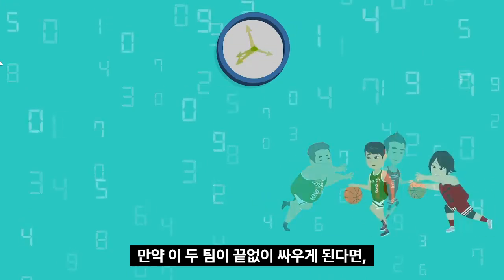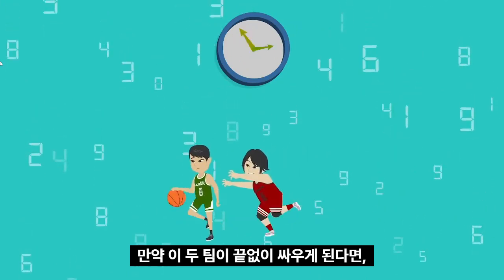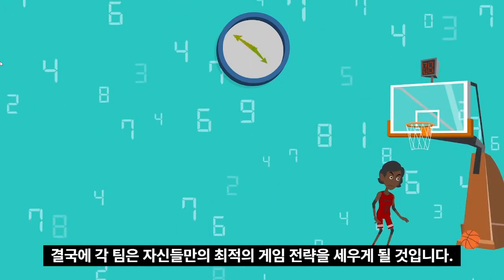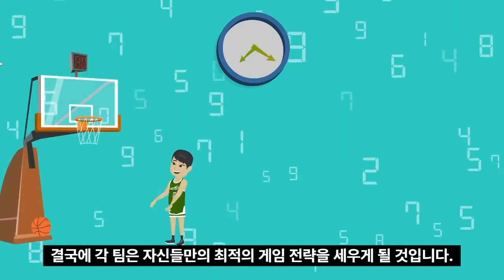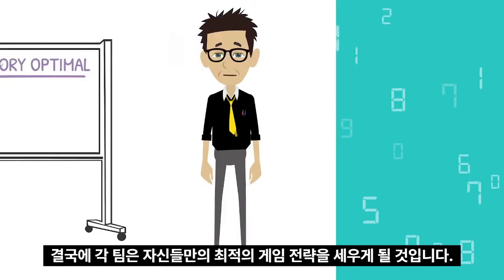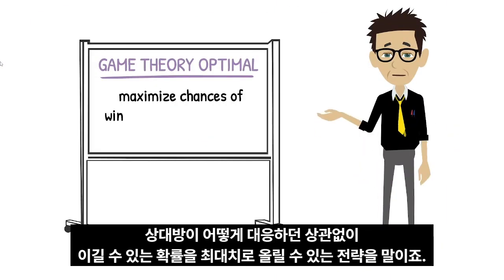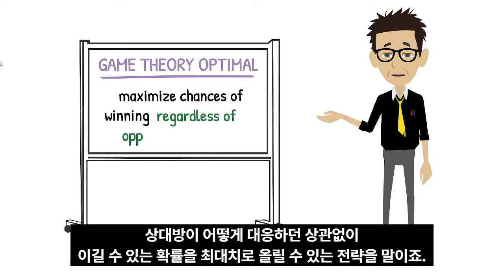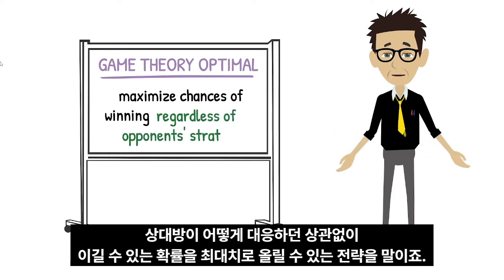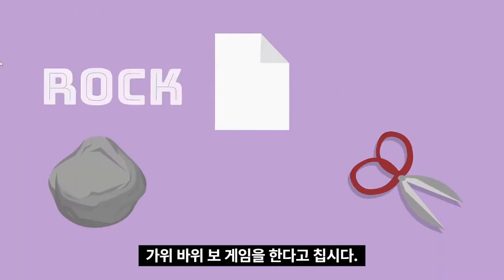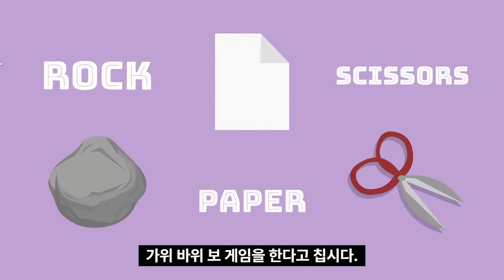If these two teams continued battling an infinite number of times, each team would eventually develop their own optimal game plan — one guaranteed to maximize their chances of winning, regardless of whatever their opponent might do to counter. Let's pretend the game is rock, paper, scissors.